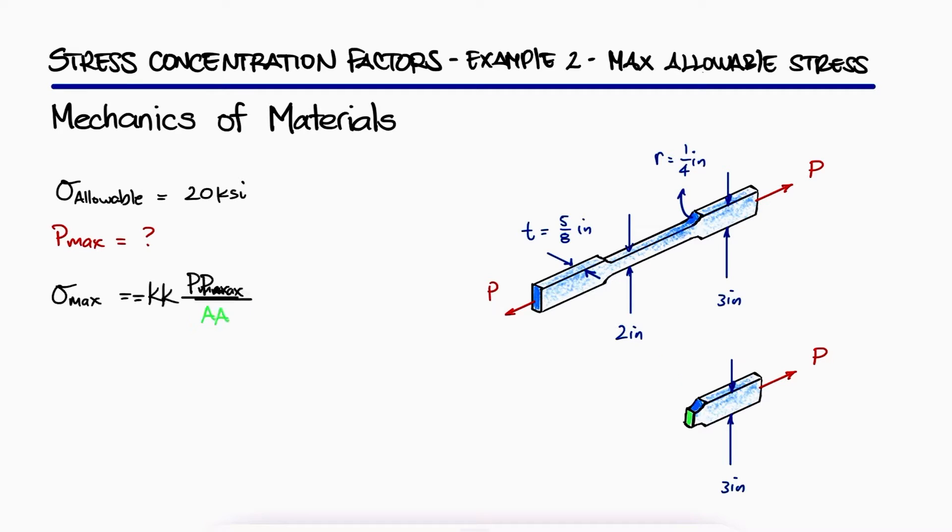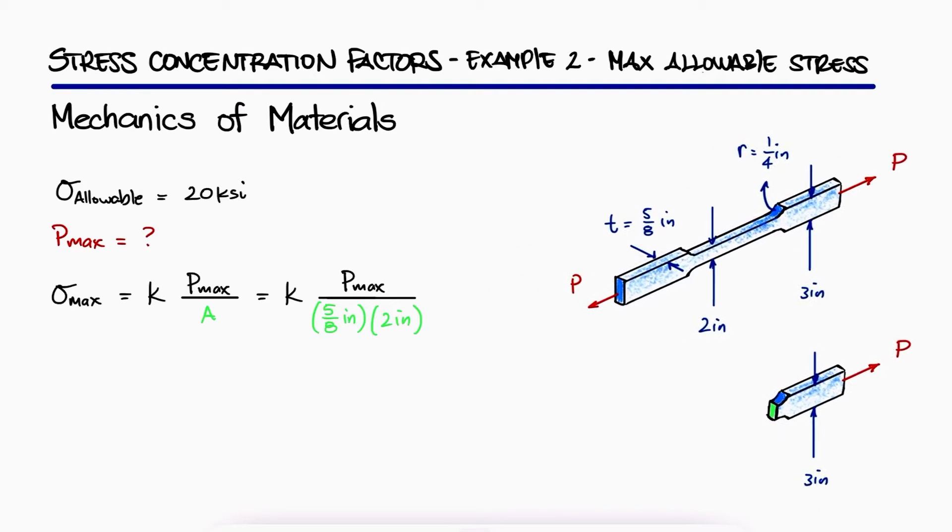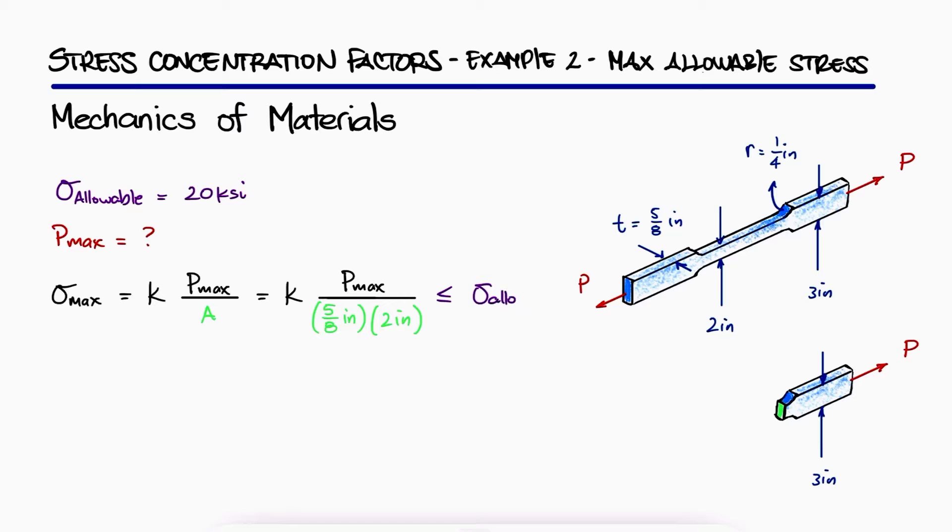The cross-section area will be equal to the thickness times the smaller width of 2 inches, and since the maximum stress cannot exceed the maximum allowable stress, we can solve for Pmax if we know the stress concentration factor K.